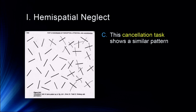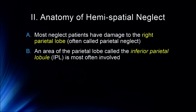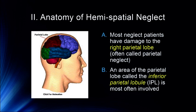This is clearly an attention task because it extends to all sorts of other areas. They do not attend to the left-hand side of their plate. They don't put makeup on the left side of their face. They don't shave the left side of their face. Most neglect patients have damage to the right parietal lobe — this is often called parietal neglect or hemispatial neglect. They're essentially neglecting the left-hand side. All that information is still available; they simply are neglecting it. The inferior parietal lobule is the area most often involved.